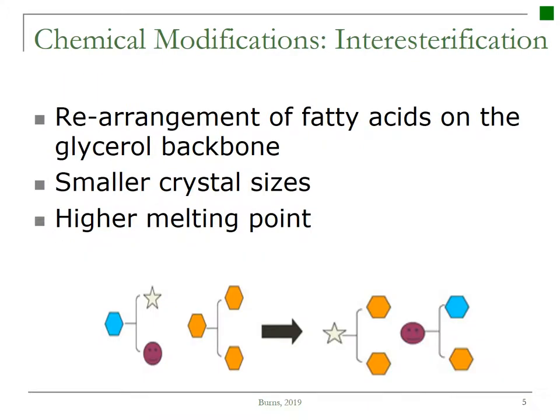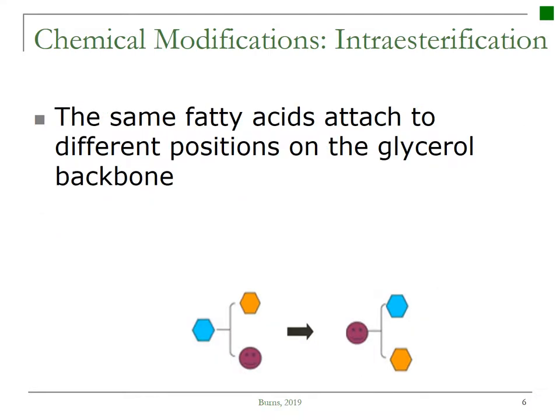A second chemical modification is interesterification, which is the treatment of fat where the fatty acids are removed from the glycerol backbone and rearranged to form a more homogeneous structure that allows for smaller crystal size and a higher melting point. New triglycerides are formed with the shifting of the fatty acids. This process is sometimes used to produce shortening and margarines without forming trans fats. The final chemical modification is intraesterification, which is very similar to interesterification, but the fatty acids attach to different positions on the same glycerol backbone.